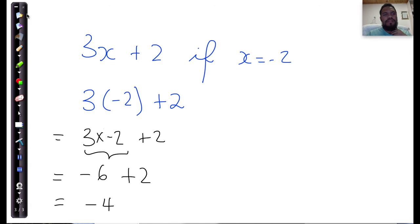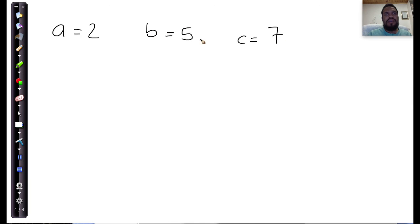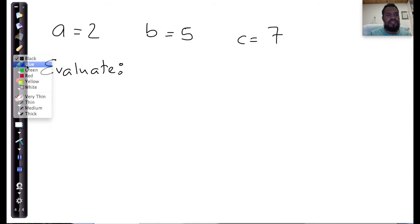So let's look at a few more examples. If we are given the following, that a is equal to 2 and b is equal to 5 and c is equal to 7, evaluate the following expressions. In other words, determine its value. Give it a numerical value. I'm going to write down these expressions.